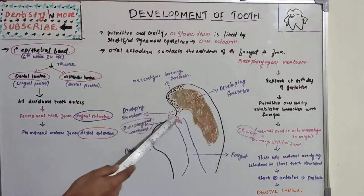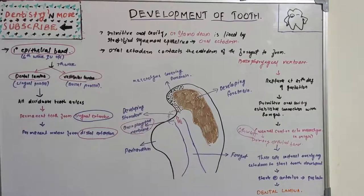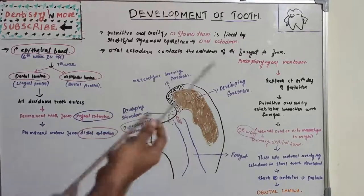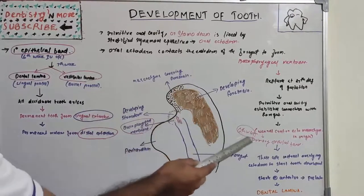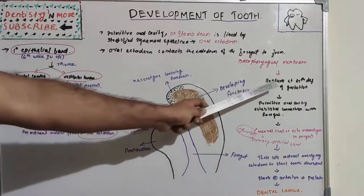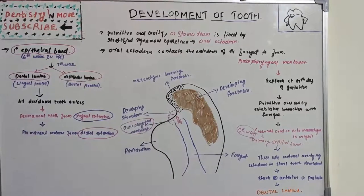Around the 6th week — approximately 2 to 3 weeks after the buccopharyngeal membrane rupture — a structure known as the primary epithelial band forms. This is because the connected tissue present here is of neural crest or ectomesenchyme origin, which creates the primary epithelial band at around the 6th week of intrauterine life.